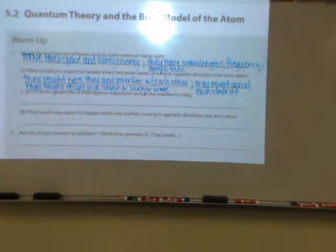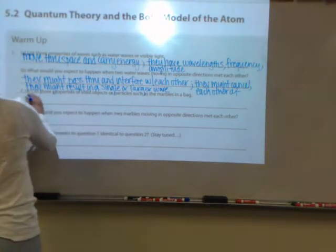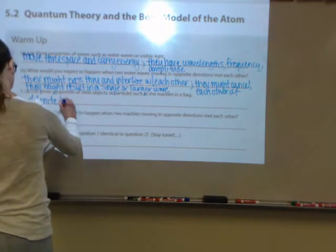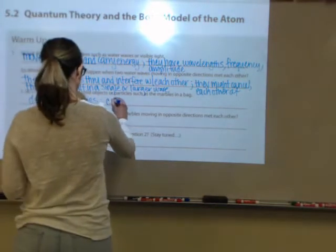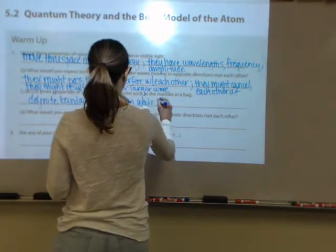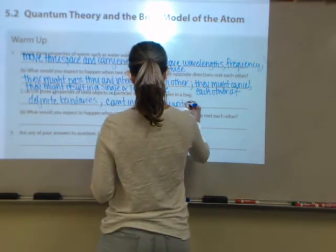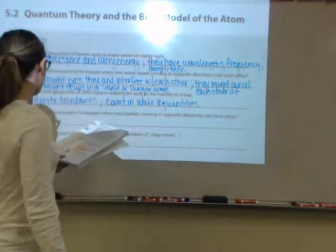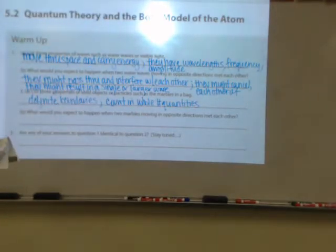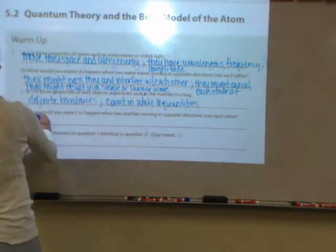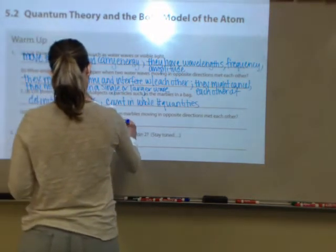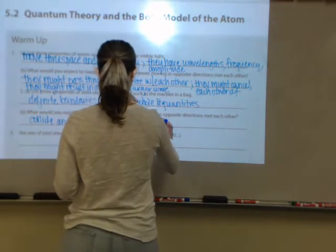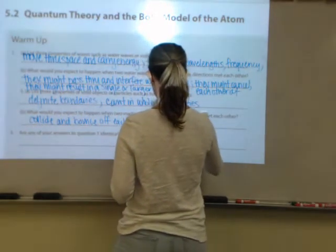Number two: list three properties of solid objects or particles like marbles in a bag. Marbles have definite boundaries, and we can count them in whole number quantities. What would you expect to happen if two marbles moving in opposite directions meet each other? Well, they will collide and bounce off of each other, and they would end up moving in different directions.